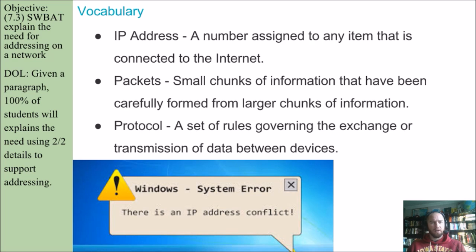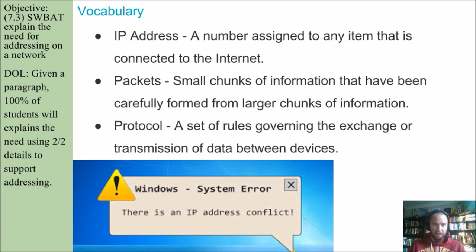Some vocabulary to touch on. An IP address is a number that is assigned to any item that is connected to the internet — that could be your phone, a laptop, or IoT devices such as a toaster or thermostat. Packets are small chunks of information that have been carefully formed from larger chunks of information. Remember TCP, the Transmission Control Protocol? A protocol is a set of rules governing the exchange or transmission of data between devices.